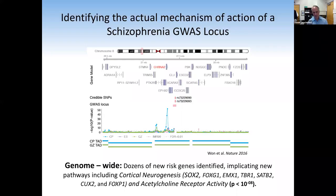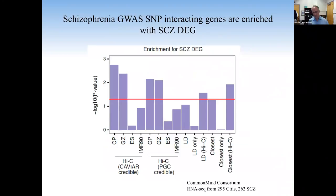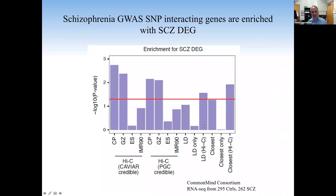We can ask: if we take credible SNPs as deemed by CAVIAR, and take those supported by Hi-C versus not, or supported by Hi-C in a non-neural tissue like ES cells or IMR-90 fibroblast cells, or those in LD or the closest gene — using the Hi-C boosts the chance that we're going to identify a target gene that is differentially expressed in postmortem schizophrenia brain from the CommonMind Consortium. It really shows the helpfulness of having tissue and stage specificity. Having a close SNP with Hi-C support — or obviously with an EQTL — is a stronger candidate.